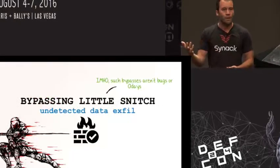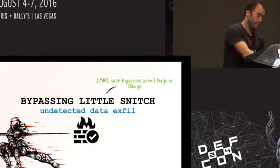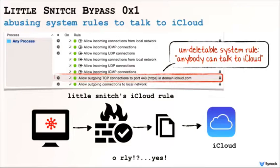So Little Snitch is a firewall — how can we bypass it? How can we exfiltrate data without being detected, or connect to a command and control server without generating any popups? The first thing: look at Little Snitch's firewall rules. There is a default, undeletable system rule that says anyone can talk to iCloud. So we can reverse engineer the iCloud protocol — it's pretty basic, it's JSON-based — and once we understand the protocol, we can set up a command and control server on iCloud. Then we write custom code to exfiltrate data or malware that connects to a C2 server on iCloud. Little Snitch will see this traffic, but since it conforms to that rule, it won't generate an alert. So basically now we can exfiltrate data and talk to a C2 server without alerting the user at all.